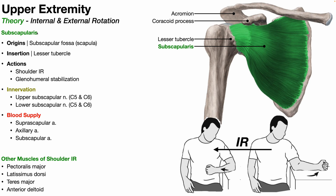The subscapularis is one of the four rotator cuff muscles — you can see it here in green. We're looking at an anterior view of the scapula. We can see the acromion and the clavicle, but notice we cannot see the scapular spine; you can only see the spine posteriorly. The other clue this is an anterior view is the coracoid process, which is closer to the screen than the acromion. The coracoid process is an anterior structure.